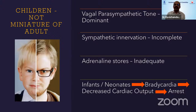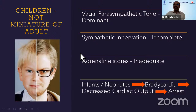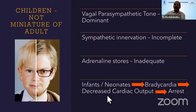In children, vagal parasympathetic tone is more dominant, the sympathetic system is different, and attenuation stores are very different — the attenuation stores are very high. In infants and neonates especially, when they go into bradycardia during a procedure, they will usually progress rapidly to cardiac output decrease and arrest. These are events that everyone needs to be aware of in the operation theater.